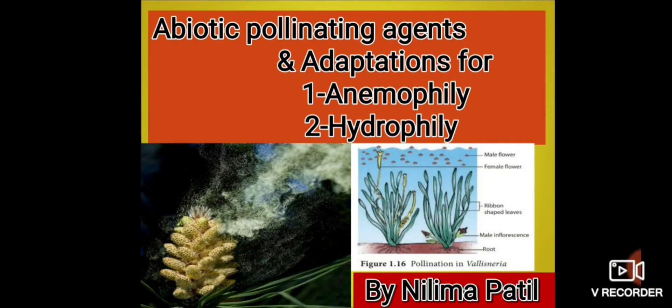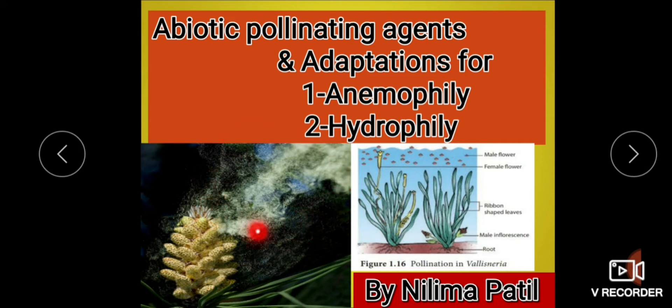Hello students. Today's topic is Abiotic Pollinating Agents and Adaptation for Anemophily and Hydrophily. Anemophily means pollination by wind, where large numbers of pollen grains are carried by wind. When pollen grains are carried by water, it is called hydrophily.